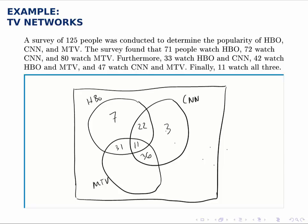Finally for MTV, we know there are 80 in that group. But we've already counted 31 plus 11, that's 42, plus 36, that's 78. So if there are 80 total and we've already counted 78 of them, that leaves only 2.